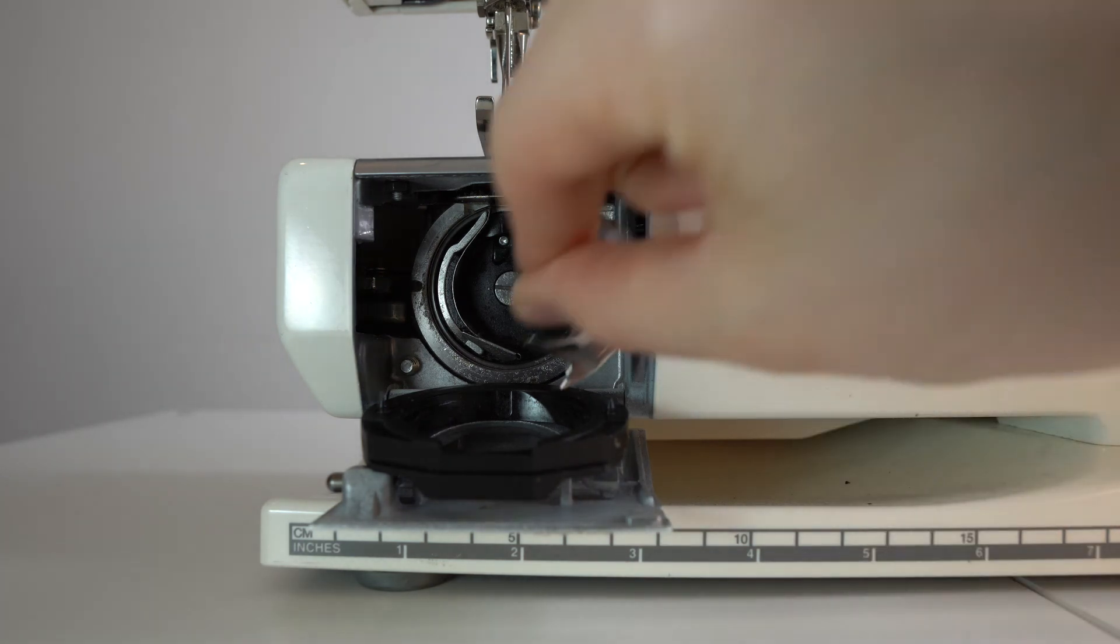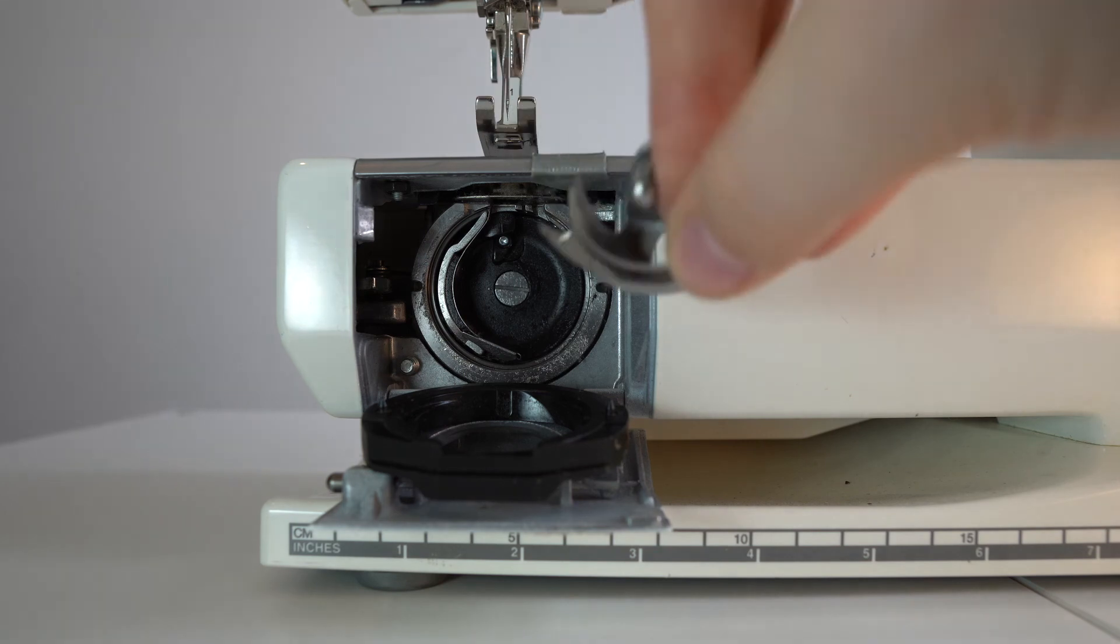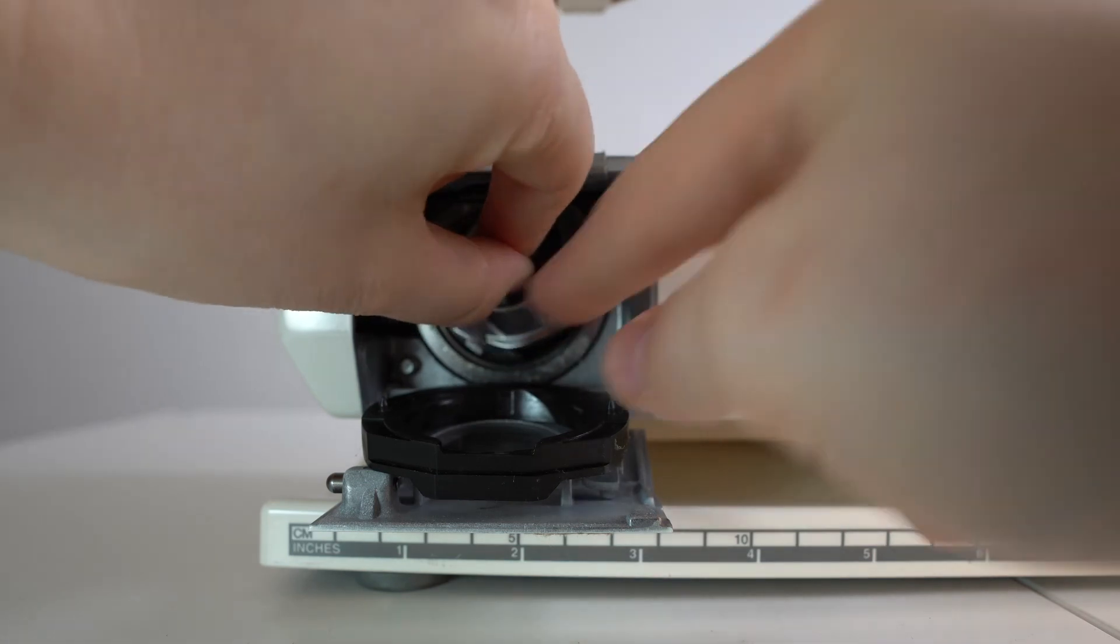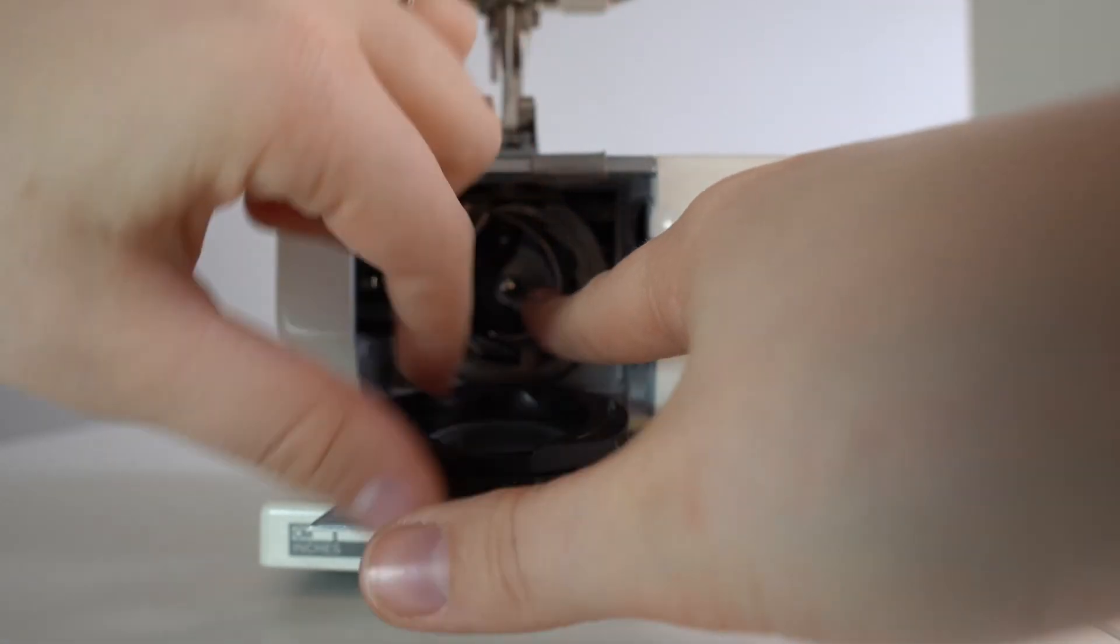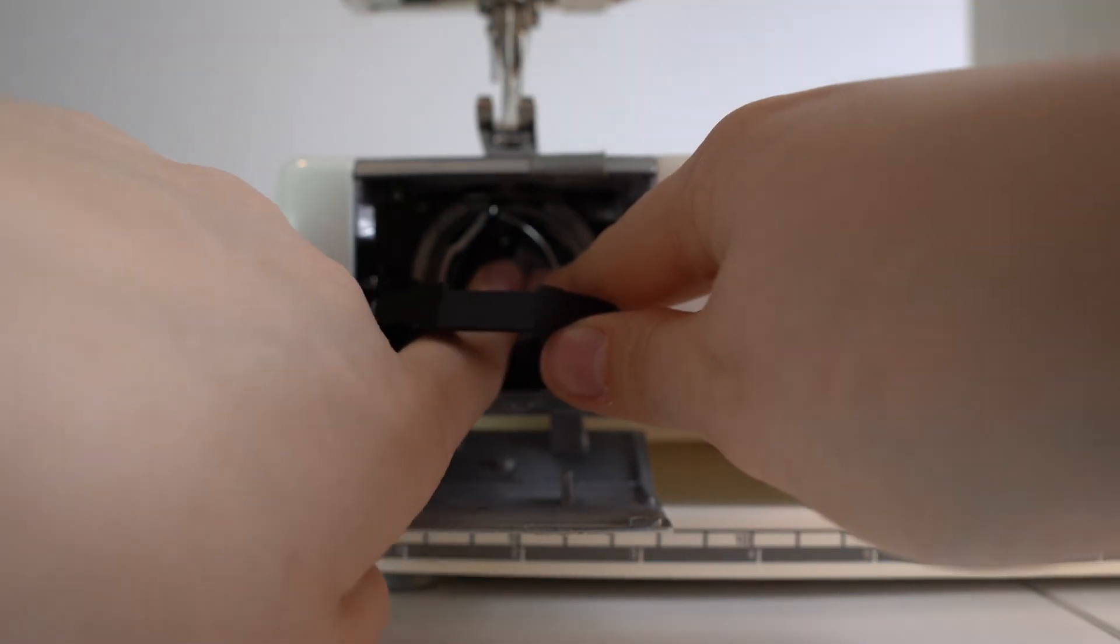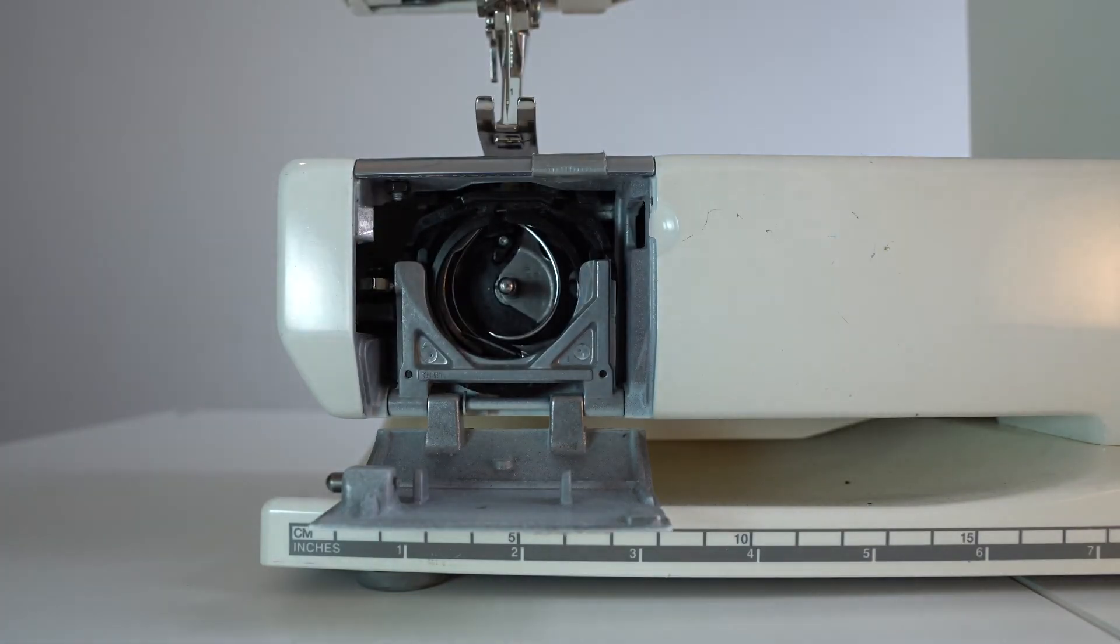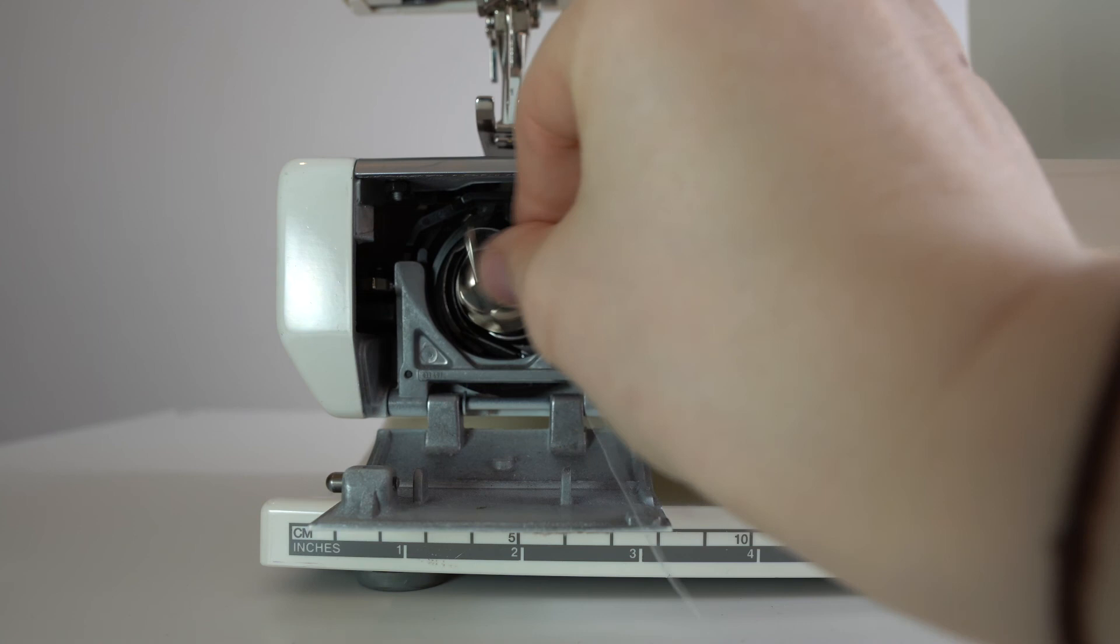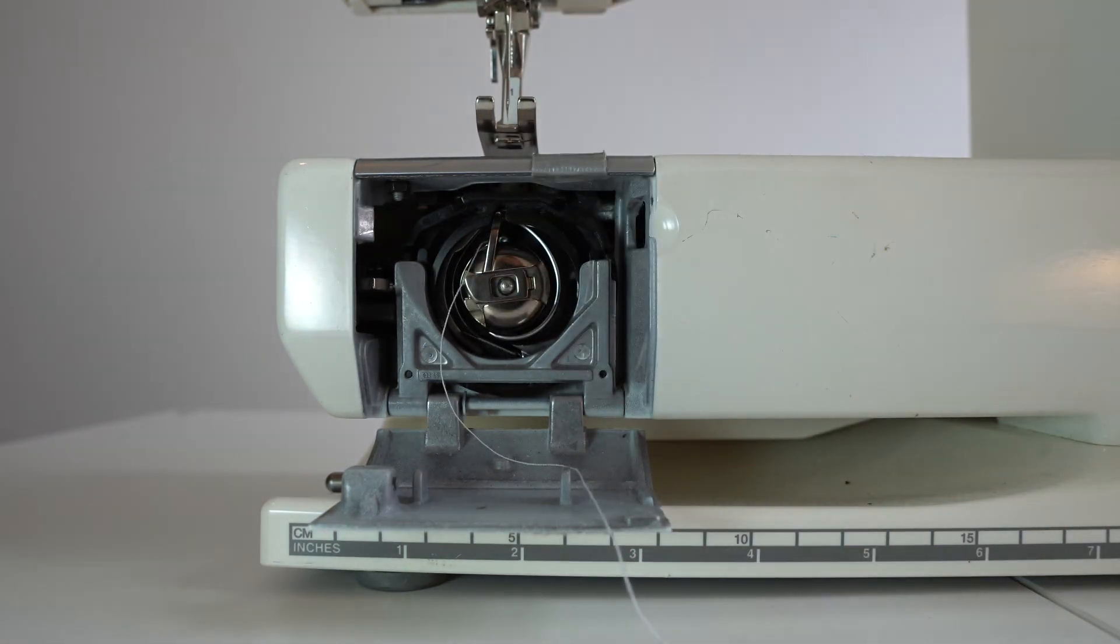Once you're happy with the cleaning process, start putting your pieces back together. Some of this you may need to hold in like so. Mine's a little bit tricky, so I usually slide this in, hold with one hand, and go through to push in place. Make sure that clicks like so. Then you can put your bobbin back in and get threaded ready to go.